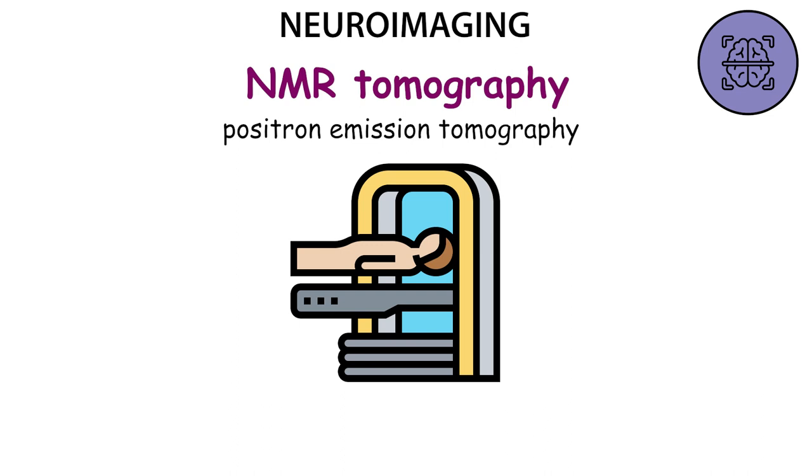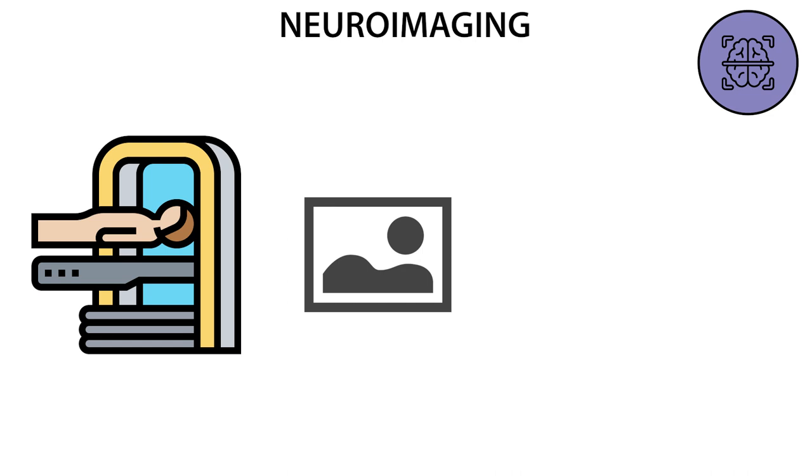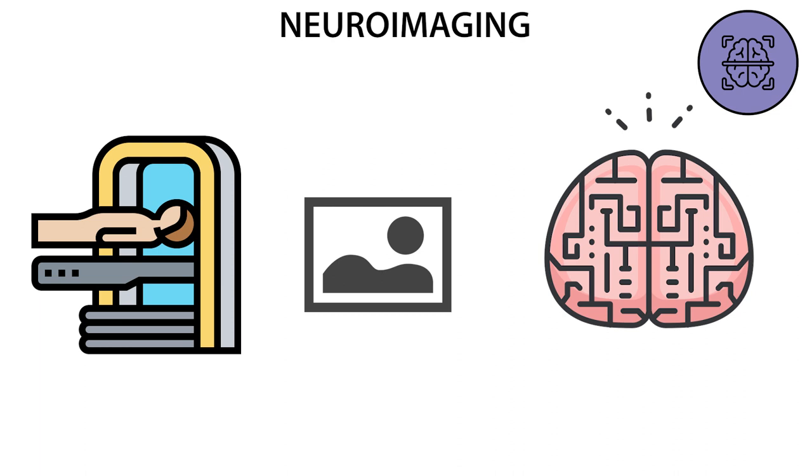In NMR tomography, image acquisition is based on the determination of hydrogen nuclei density distribution in the brain matter and on the detection of some of their physical characteristics, in particular, relaxation time. The peculiarities of NMR tomographic images include the fact that they allow obtaining not only anatomical but also physico-chemical information.